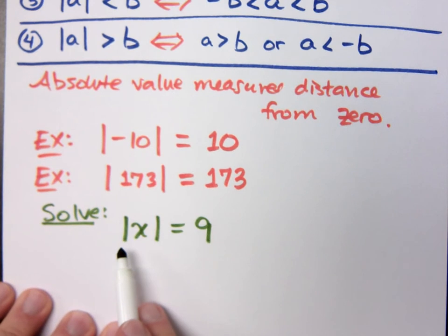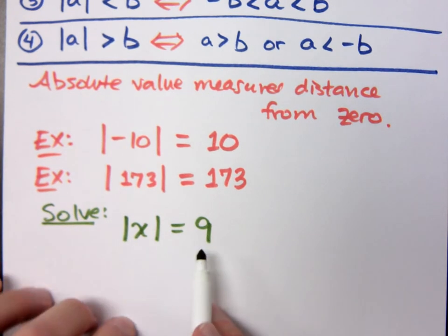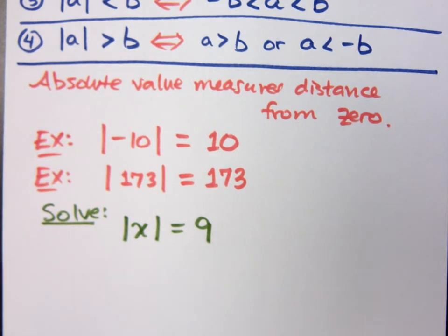What numbers are 9 units away from zero? 9 and negative 9. You know this. It's 9 and negative 9 are both 9 units away, right?